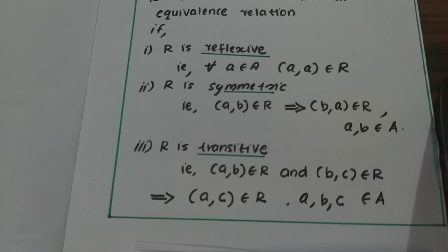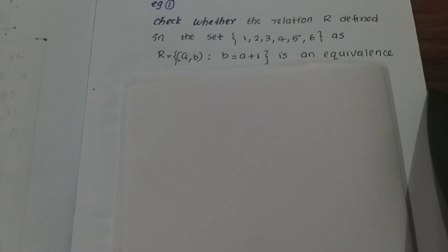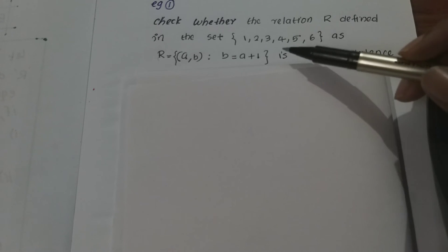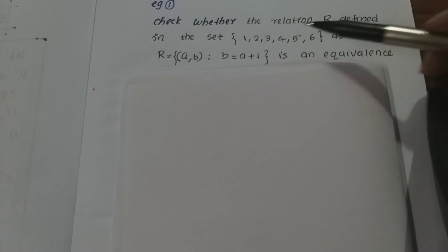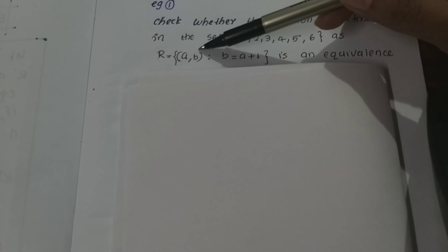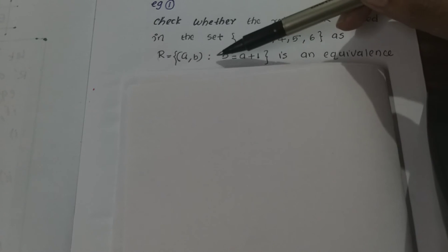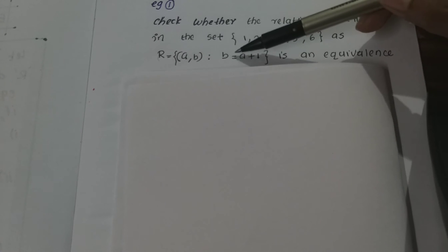Now let's consider examples. Example 1: Check whether the relation R defined in the set {1, 2, 3, 4, 5, 6}, with relation defined as (a, b) such that b is equal to a plus 1, is an Equivalence Relation.